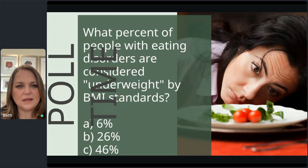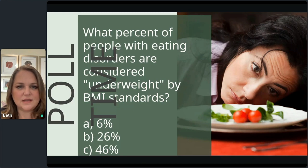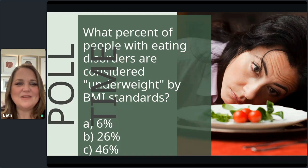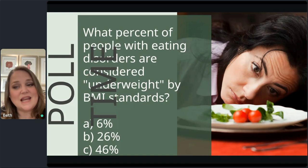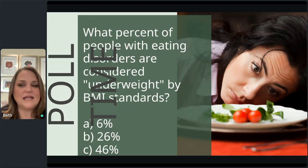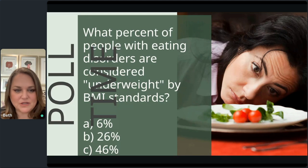Let's take a poll. What percent of people with eating disorders are considered underweight by BMI standards? The answer is A — only 6% of folks with eating disorders are considered underweight by BMI standards, meaning 94% of people remain above that cutoff. The takeaway: you can't tell an eating disorder by the body that contains it, which is why we need to screen everybody.